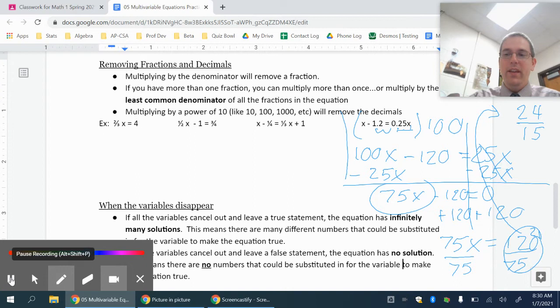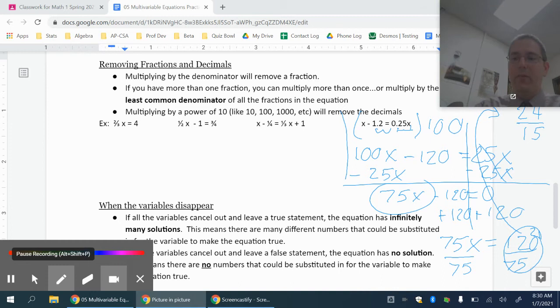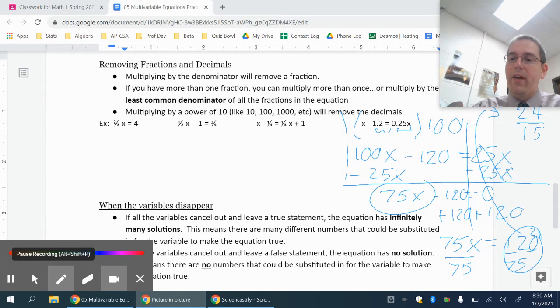Now if I have 24 over 15, I notice both of those can divide by 3 again. The way I know that is 2 plus 4 is 6, which divides by 3. 1 plus 5 is 6, which divides by 3. So both of those numbers divide by 3.